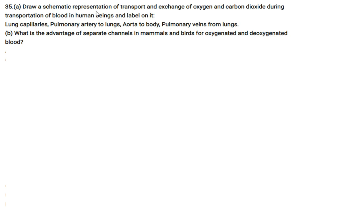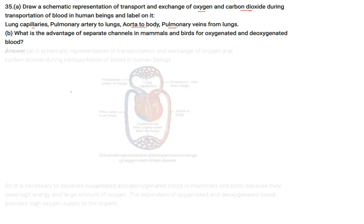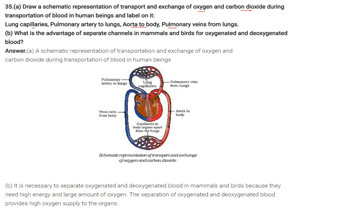Draw a schematic representation of transport and exchange of O2 and CO2 during transportation of blood in human beings, labeling lung capillaries, pulmonary artery to lungs, aorta to body, and pulmonary veins from lungs. The diagram shows lung capillaries, pulmonary artery to lungs, pulmonary vein from lungs, vena cava from body, aorta to body, and capillaries in body organs apart from the lungs.